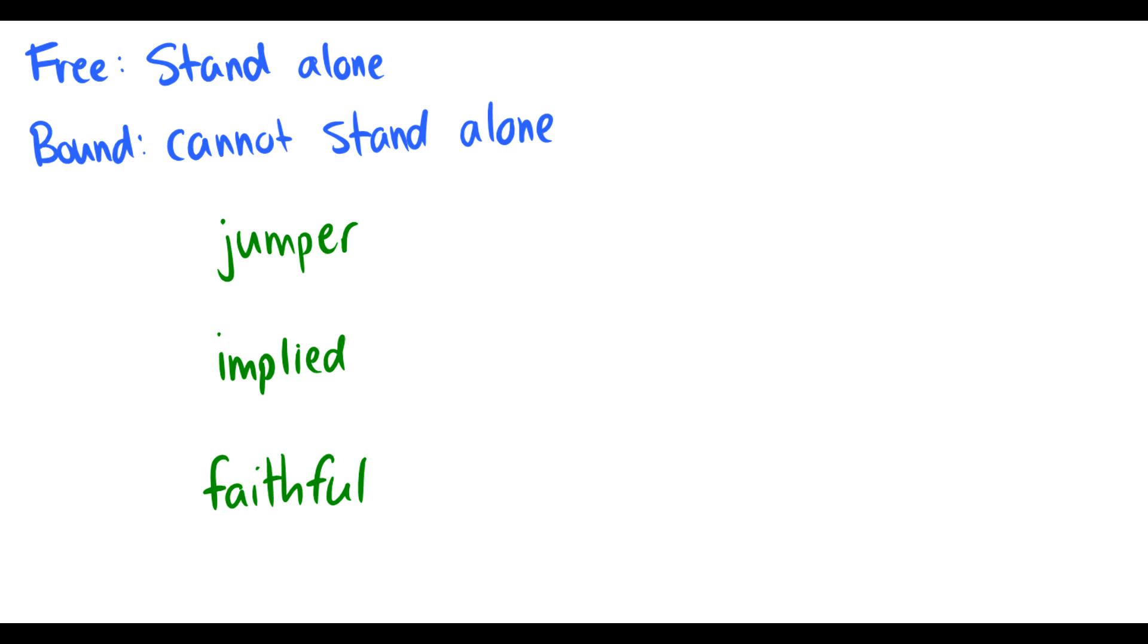So jump you can say jump on its own. So jump is free but this -er is bound because we can't just say yeah that er over there is doing something. No, this bound morpheme modifies the word jump.